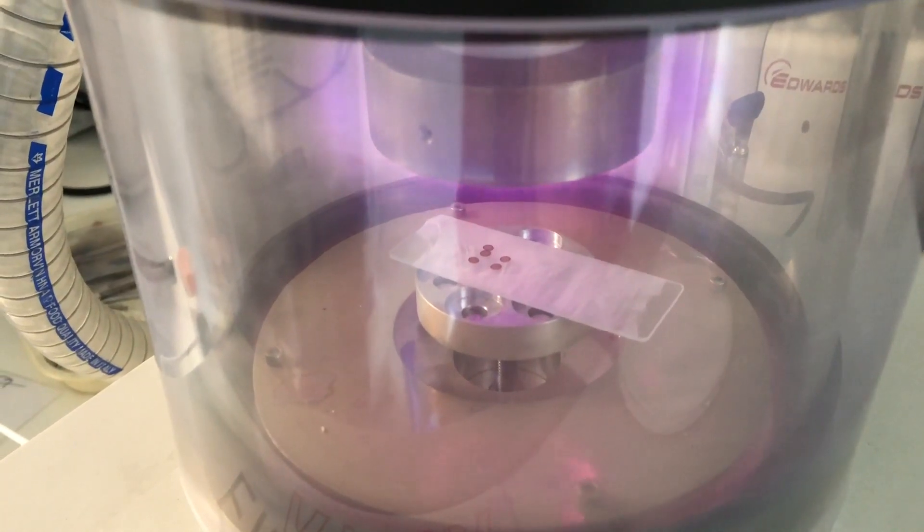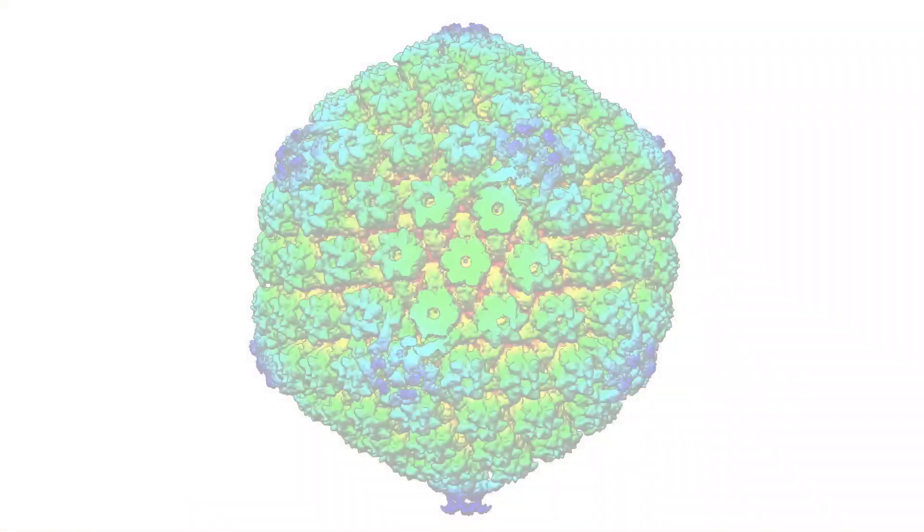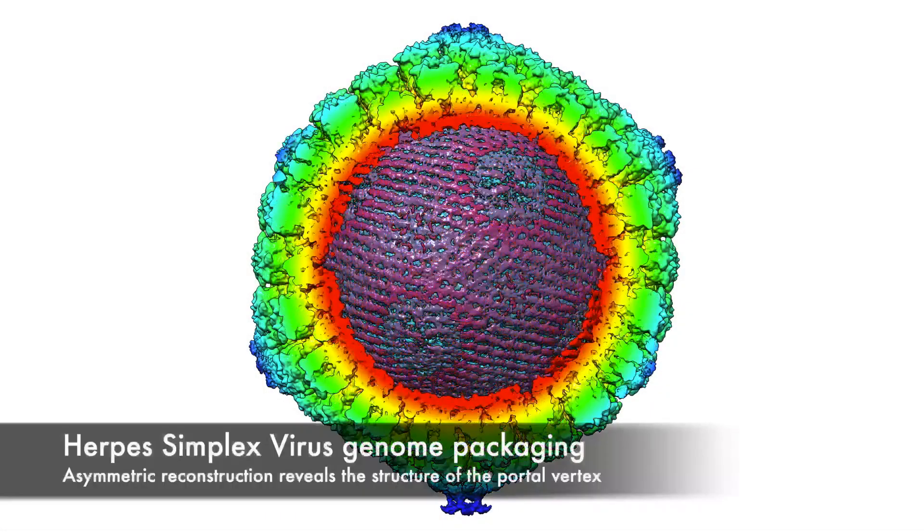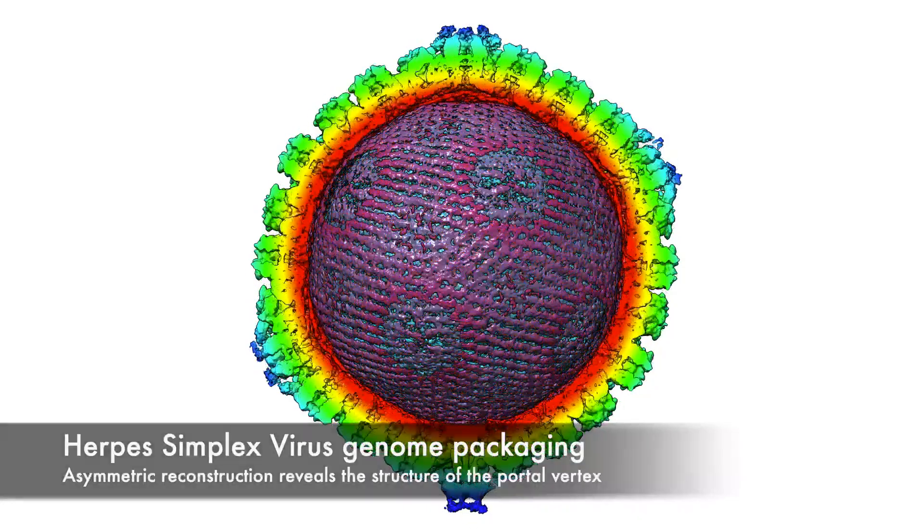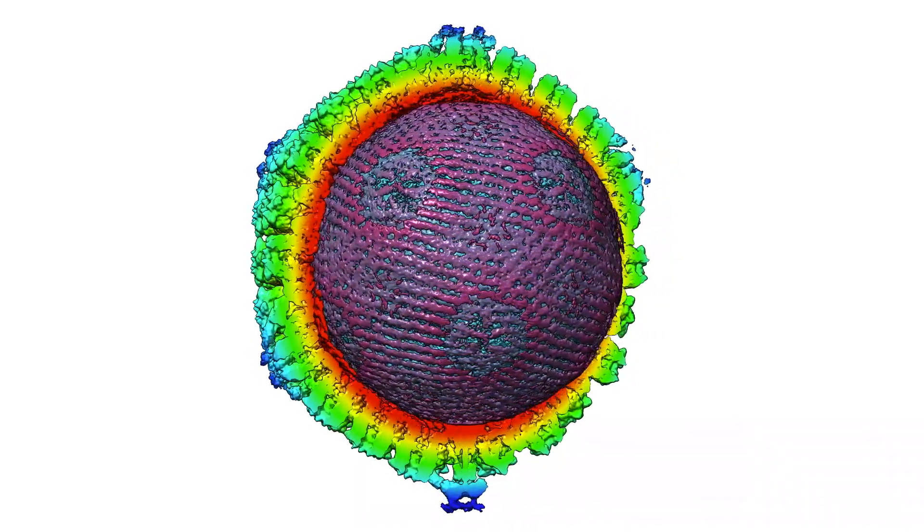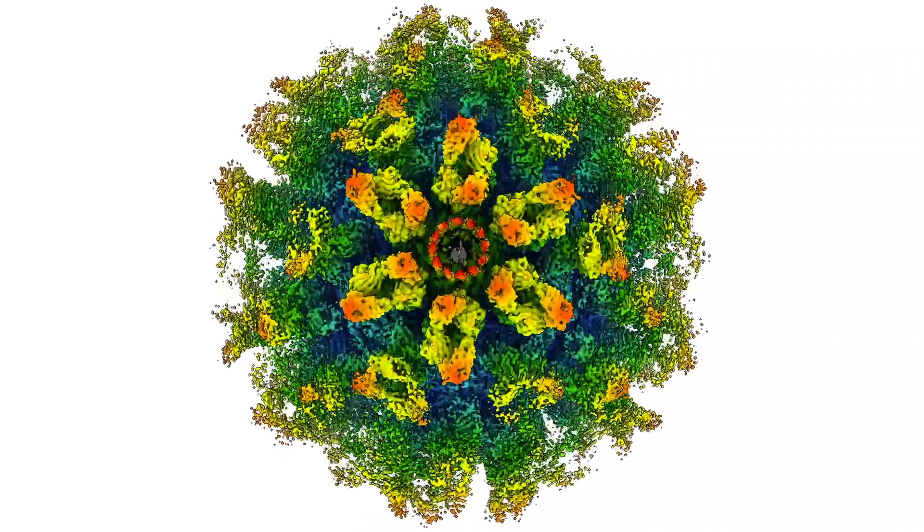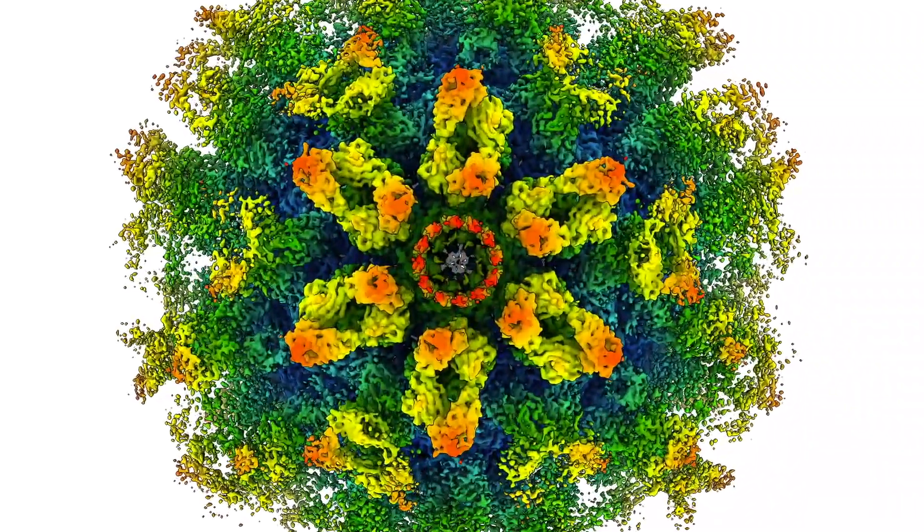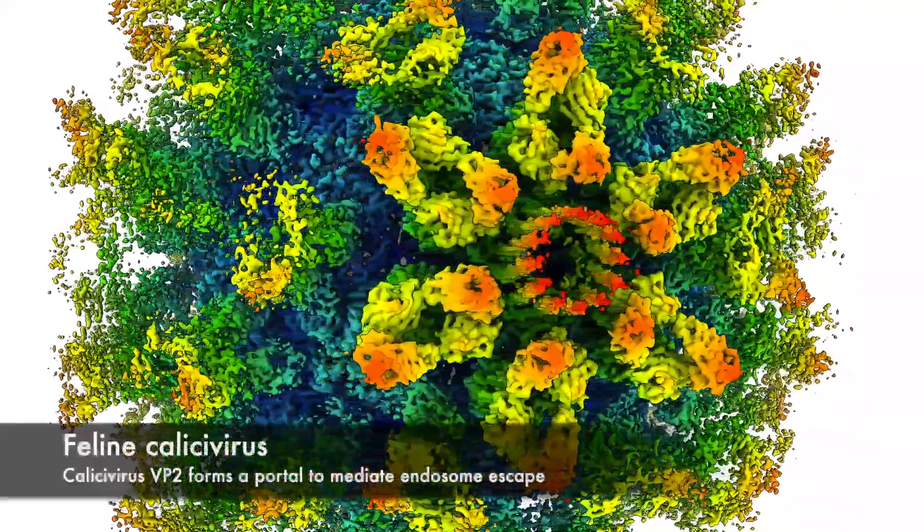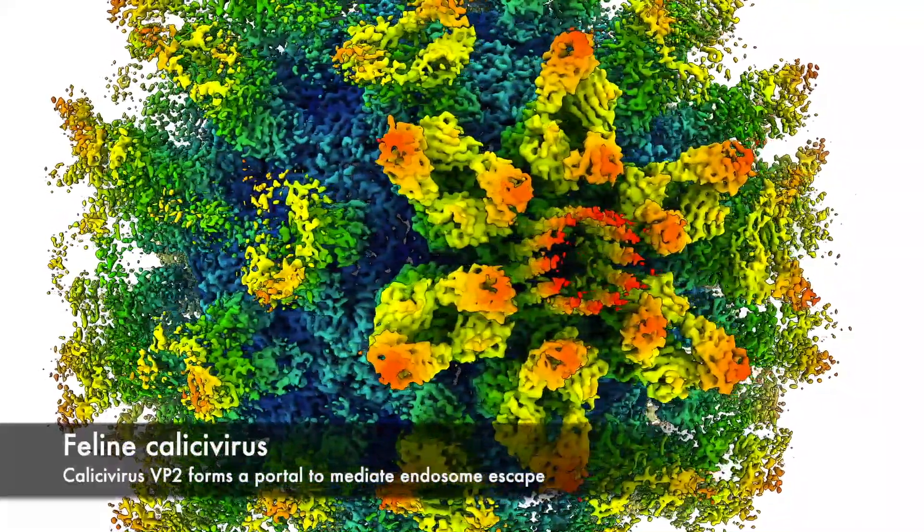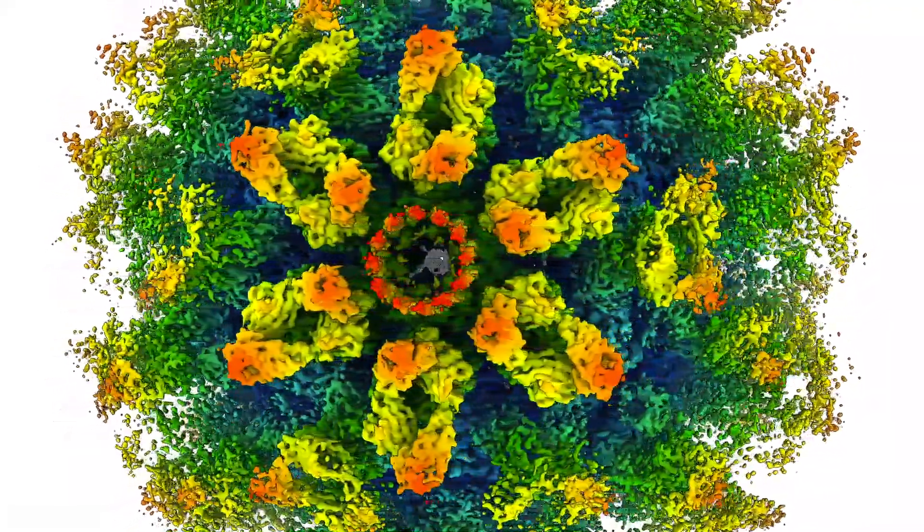My lab uses cryo-EM to investigate the structure and morphogenesis of filamentous respiratory viruses such as influenza A and respiratory syncytial virus. We also study genome packaging in herpes simplex virus, calcivirus entry and endosome escape, and adenovirus tropism and entry. We will also engage with the current public health emergency, starting a research program to develop entry inhibitors targeting SARS coronavirus 2.